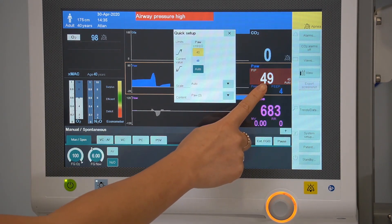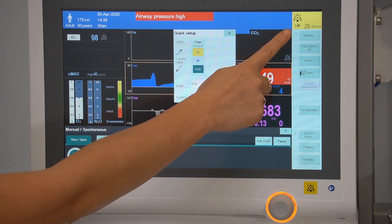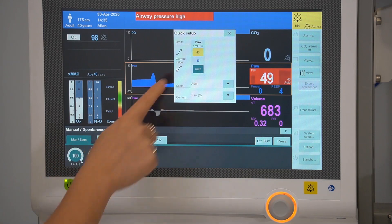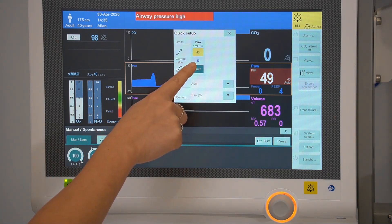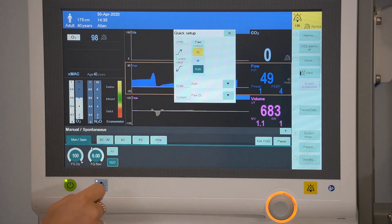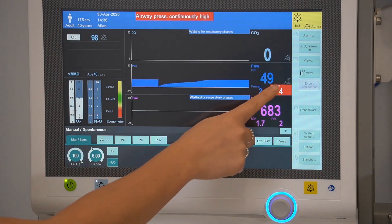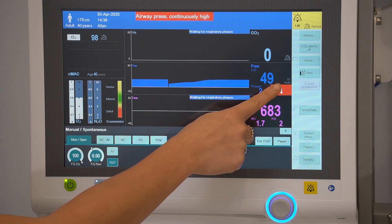When a parameter breaches the set alarm limits, you can use the silence button to silence the alarm for two minutes. The current value will be displayed here and the breached alarm limit will be highlighted allowing for easy adjustment of the alarm. Your new alarm limit will be displayed on the side.